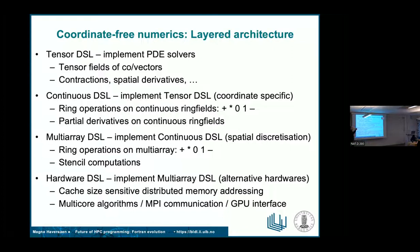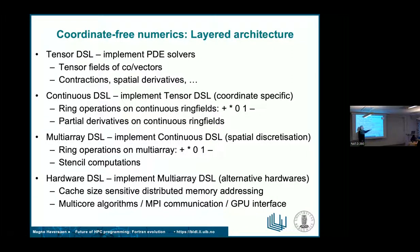Then we move down to the spatial discretization level, where we implement the continuous DSL by choosing a spatial discretization. We can do that in a multidimensional array language. This has ring operations on the multi-array — you have an array data structure with point-wise addition, multiplication, zero, one, subtraction. The multidimensional array structure in Fortran allows you to do these operations easily. The partial derivatives translate into stencil computations on the array representation.